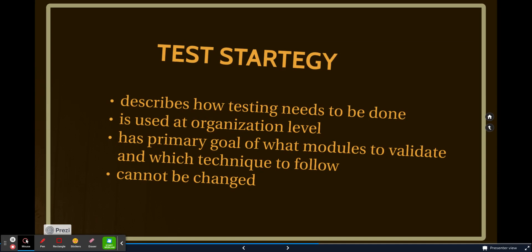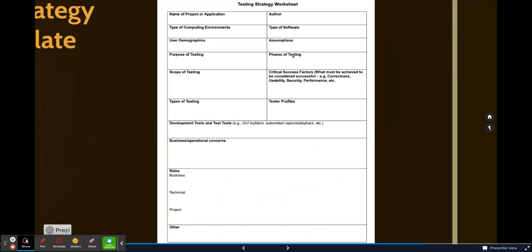So if you rewind a bit, you will see that these are just polar parts. Every pointer is opposite to the pointer that we just discussed. So again, to give you a better explanation of what it actually is, I'll show you the example or the template of a test strategy.